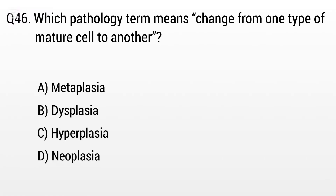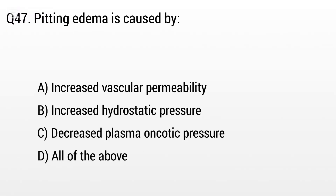Question 46. Which pathological change describes transformation from one type of mature cell to another? The right answer is Option A: Metaplasia.